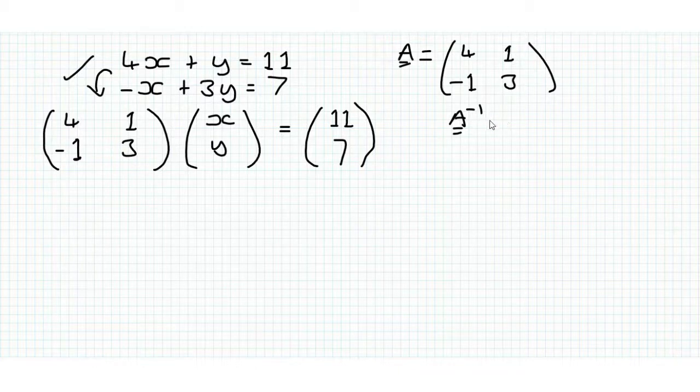And A inverse is equal to, well first we find the determinant. So that's 4 times 3, 12, minus, minus 1 times 1, so that's plus 1. And then we divide by that, so that's 1 over 13.